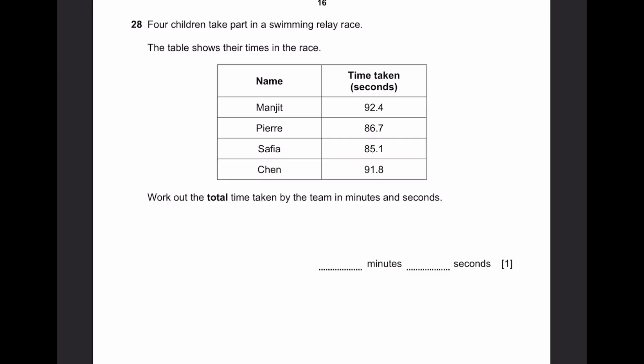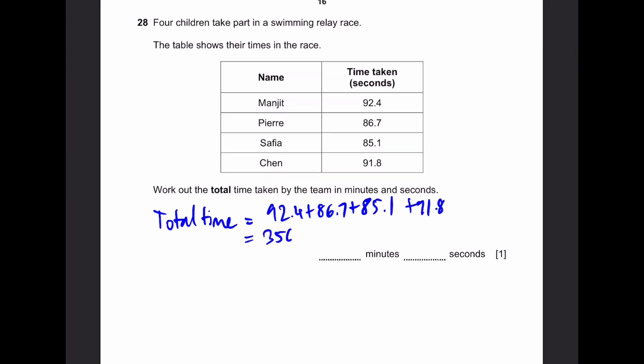Question 28. 4 children take part in the swimming relay race. The table shows the times in the race. Work out the total time taken by the team in minutes and seconds. The total time will be, adding all of these numbers, total time equals 92.4 plus 86.7 plus 85.1 plus 91.8. That will be equal to 356 seconds. And if you convert this to minutes and seconds, we divide by 60 and get the quotient and remainder. The quotient will be 5, so 5 minutes, and then the remainder is 56, so 56 seconds. 5 minutes and 56 seconds, that's our answer.